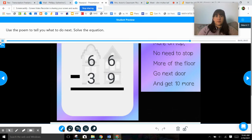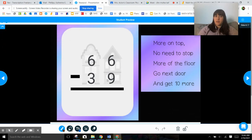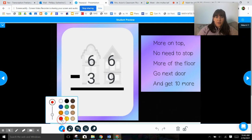66 minus 39. So we're going to use the poem to help us. We also have the pictures of the houses behind us to help us too. So remember this is our house. I'm going to grab a pen. I feel like red shows up pretty good.